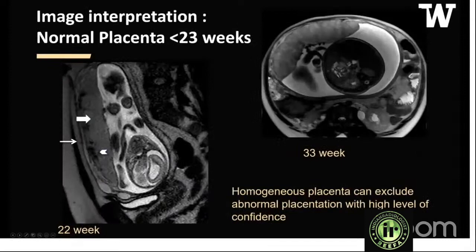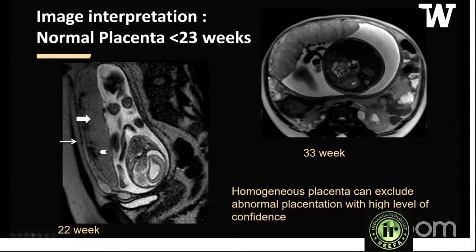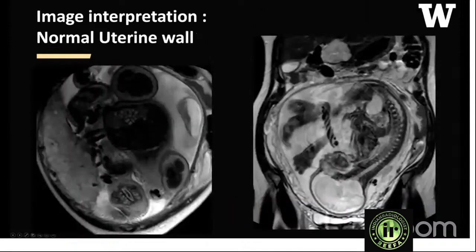A normal placenta is homogeneous. At 22 weeks it has a uniform appearance — the dark areas along the periphery are small vessels, not T2 dark bands. At 33 weeks, homogeneity decreases and the placenta appears more heterogeneous. A relatively homogeneous placenta can exclude abnormal placentation with a high level of confidence. The uterine wall is normally dark on T2-weighted images, though it can appear mildly hyperintense if there are many vessels within it.